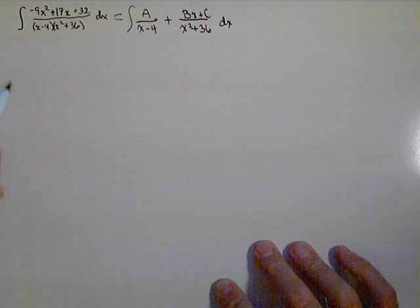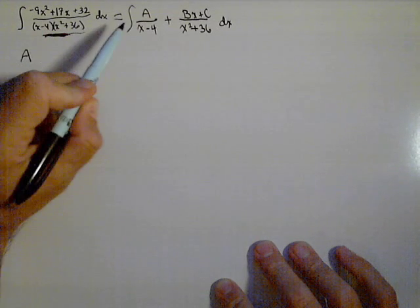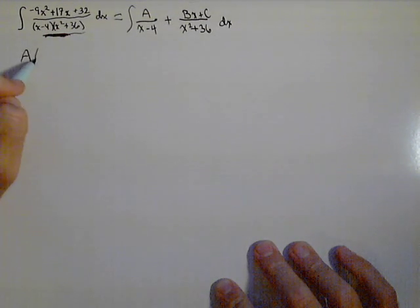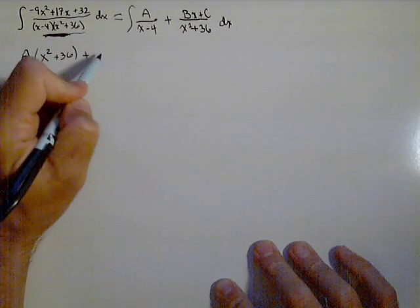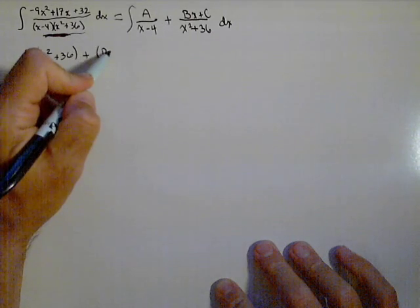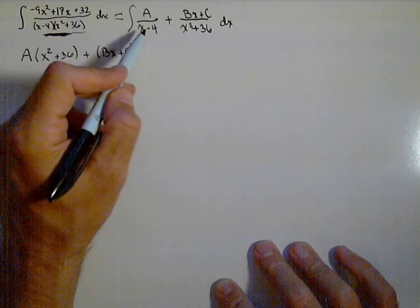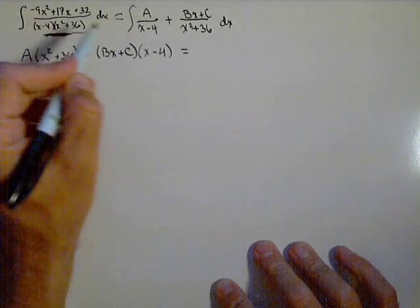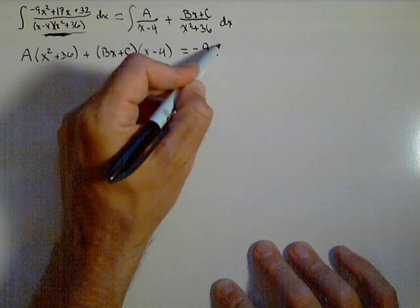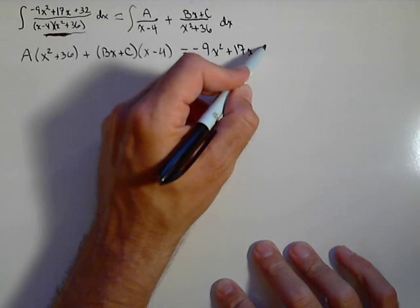So there's the form that our result will be in. Now, what we need to do is multiply our new constants by whatever's needed to get a common denominator. This is the least common denominator here. So A would need to get multiplied by x squared plus 36. Bx plus C on the other hand already has that in the denominator. So it would only need to get multiplied by x minus 4.